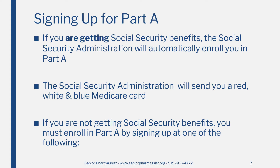Signing up for Medicare Part A is automatic for many people. If you are receiving Social Security benefits, Social Security will automatically enroll you and send you a red, white, and blue Medicare card. Your Medicare card will identify the date your Part A benefits begin, or the Part A effective date. If you are not receiving Social Security benefits, or you don't receive a Medicare card, you must enroll in Part A by contacting Social Security.